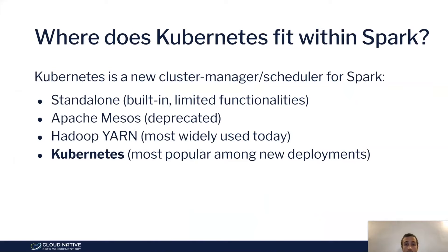Where does Kubernetes fit within Spark? Kubernetes is a new cluster manager for Spark. Spark can take some code and figure out how to distribute it across a cluster of several machines, but it doesn't actually manage those machines. Spark does come with a standalone cluster manager, but it has limited functionality. Other popular cluster managers include Apache Mesos — now deprecated — and Hadoop YARN, which is the most widely used even today. And then there is Kubernetes, which is definitely the most popular option among new deployments.